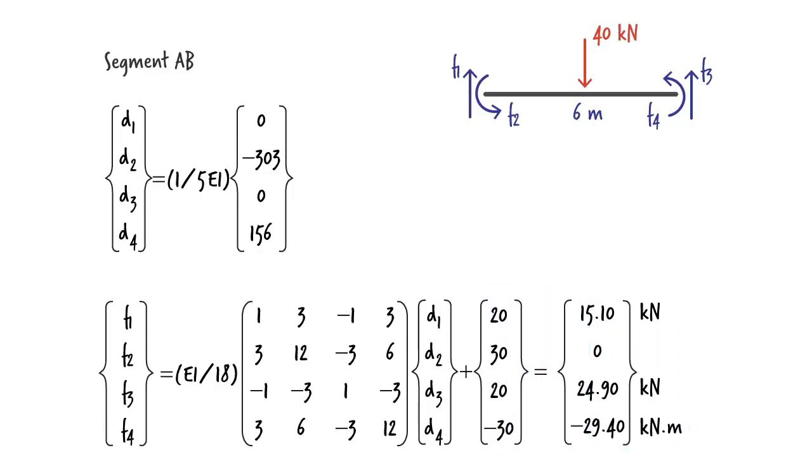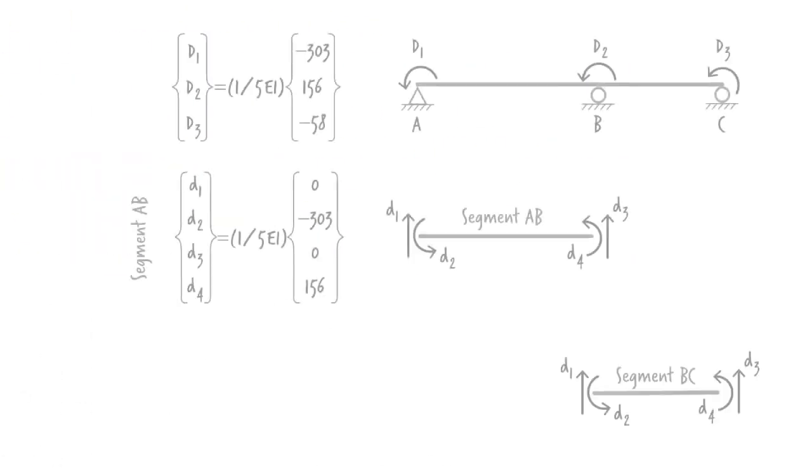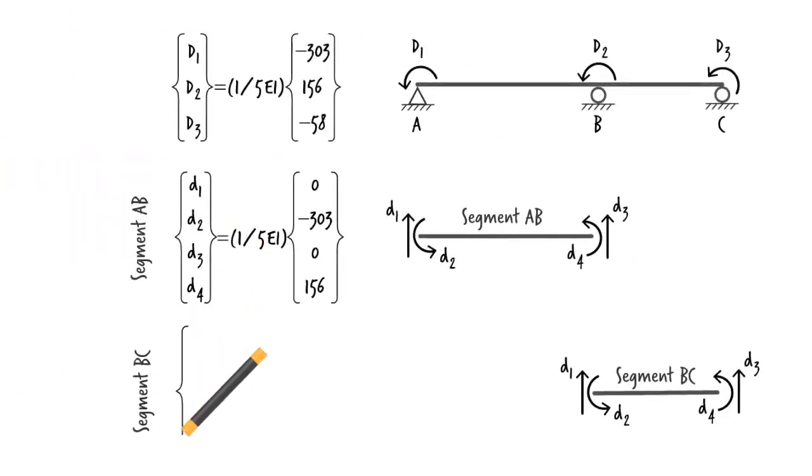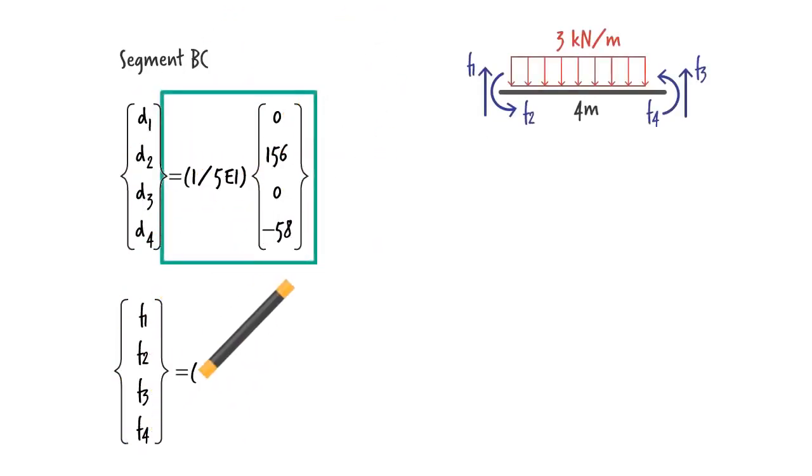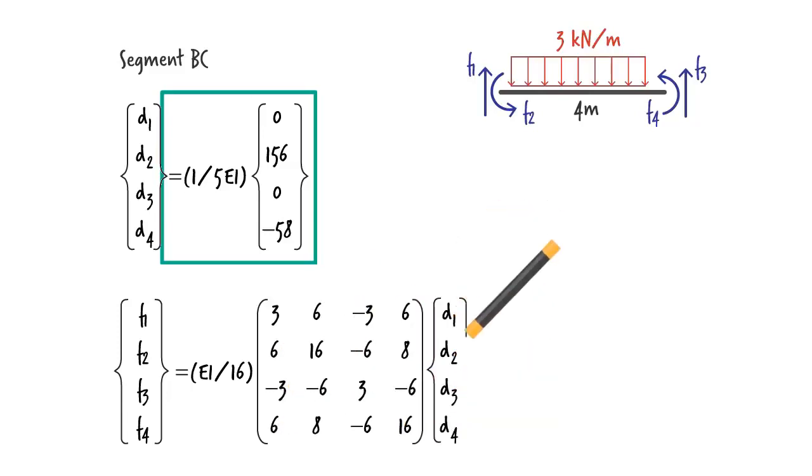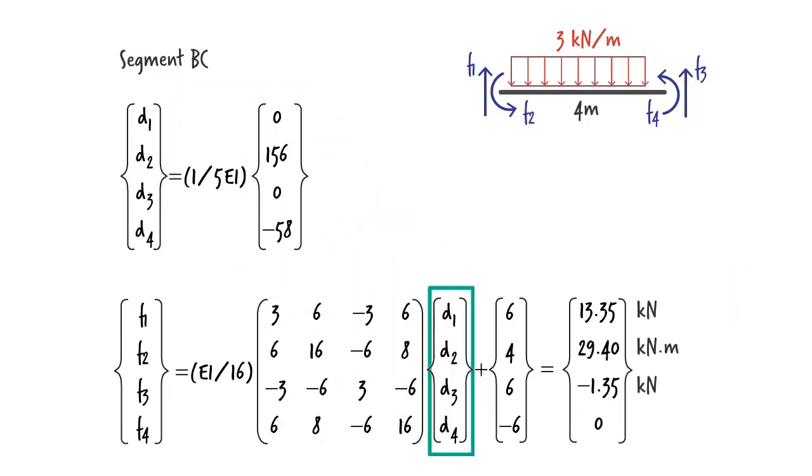Knowing the member end forces, we can draw the segment's free body diagram. For segment BC, the displacement vector is... Substituting it here, we get these member end forces. Here is the free body diagram for the segment.